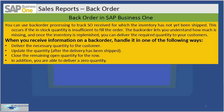You can deliver the necessary quantity to the customer, you can choose to update the quantity after the delivery has been done, or you can choose to close the remaining open quantity for that item or customer. In addition to all these options, SAP Business One also allows you to deliver a zero quantity.